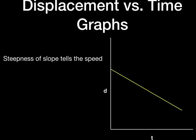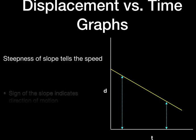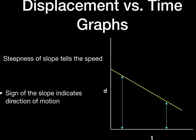A graph with a constant downward slope indicates that the object was a greater distance from the origin early in the motion and closer later on. Since the second distance is smaller than the first, that results in a negative slope value. A negative slope tells us the object is moving toward our reference point, while a positive slope indicates it's moving away. So on the displacement versus time graph, two critical pieces of information come from the slope: how fast the object is going and the direction it's moving.